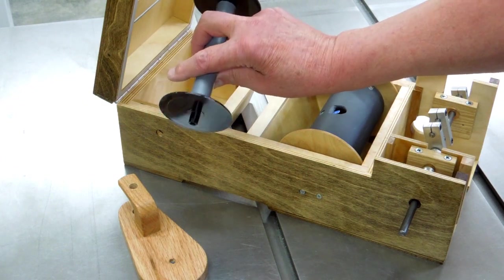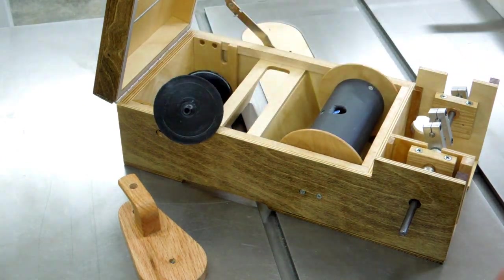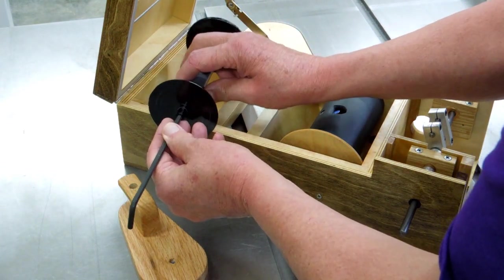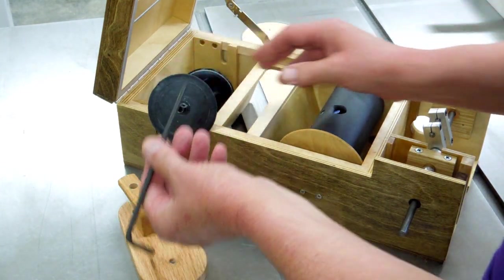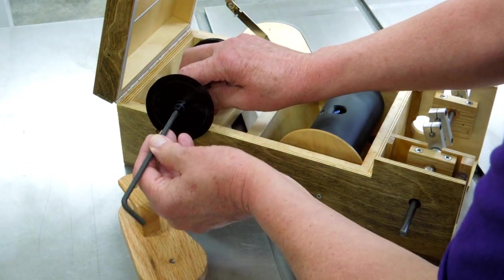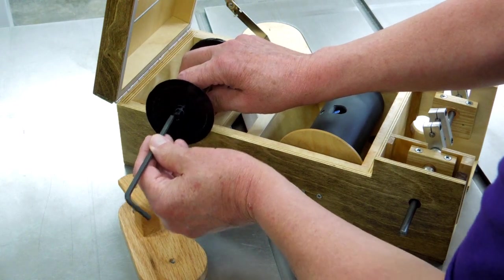These plastic spools in particular, this one that came from Melvin Wright, they have a hex socket on the end which is 5mm. You can buy a 5mm ball end hex wrench and that ball end makes it real easy to go in and out of that socket.